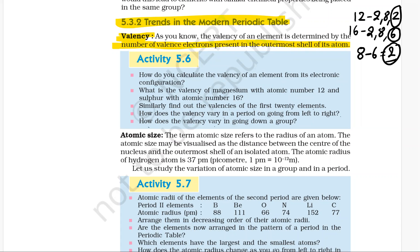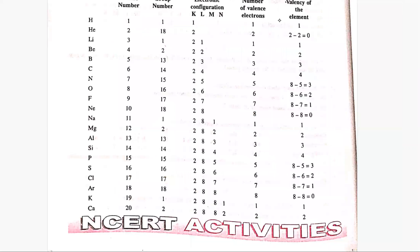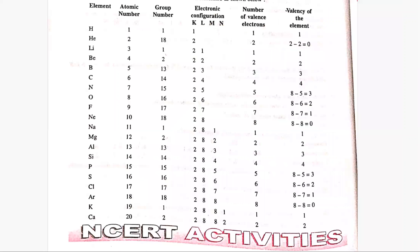I am going to display one page. It will show the electronic configuration of the first 20 elements. The first 20 elements are hydrogen, helium, lithium, beryllium, boron, carbon, nitrogen, oxygen, fluorine, neon, sodium, magnesium, aluminium, silicon, phosphorus, sulfur, chlorine, argon, potassium, and calcium.